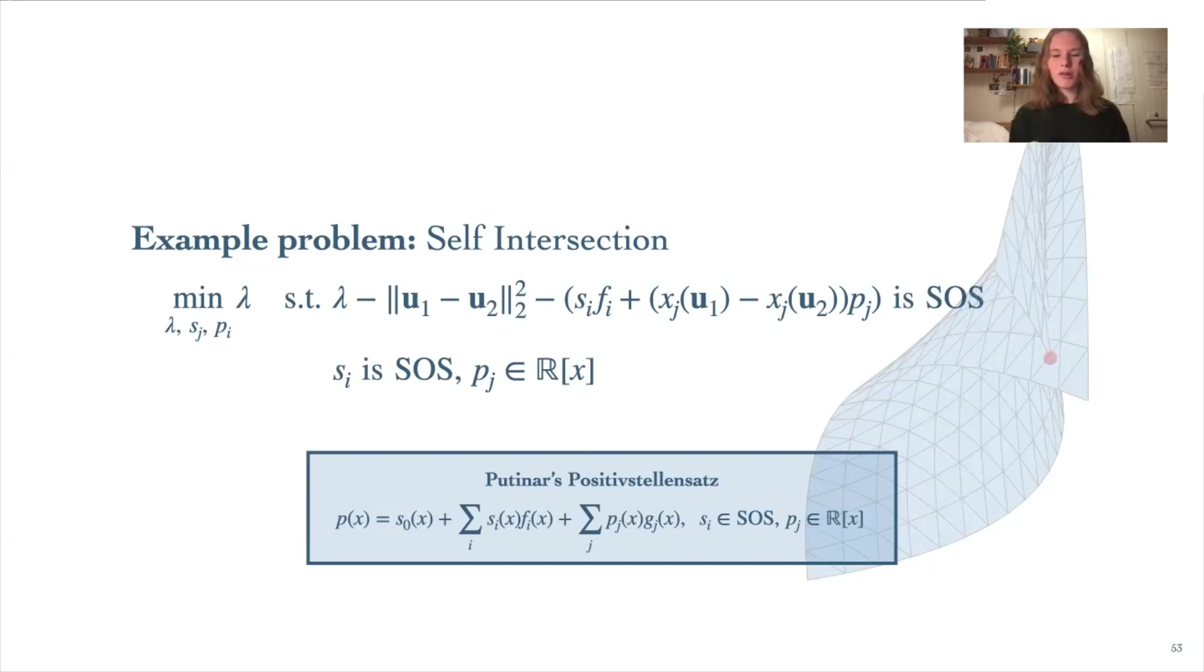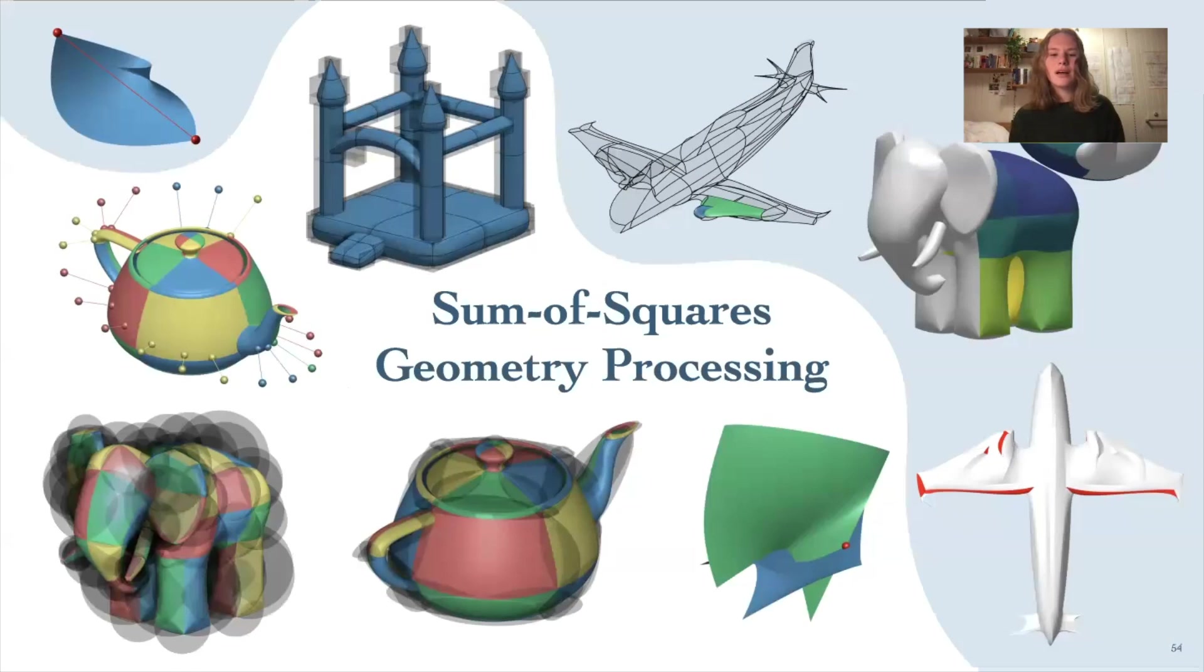This problem looks quite a bit more complicated than our closest point problem, but we can still make it tractable by applying the Positivstellensatz. With the addition of the second point, we now have more f's, the inequality constraints bounding us to be within the triangle. And in this problem, we also have a set of equality constraints equating each dimension of the map. These correspond to the g's in the Positivstellensatz. So overall, we get a relaxed problem that looks like this here, and that's equivalent to an SDP formulation of this problem. There's three other problems that include optimization of multiple points: the surface-surface intersection that we mentioned before, continuous collision detection, and the patch diameter problems. And all of these problems, we're able to relax the original optimization problem into an SDP problem by directly applying the Positivstellensatz like we just saw.